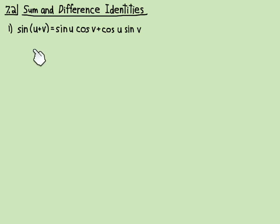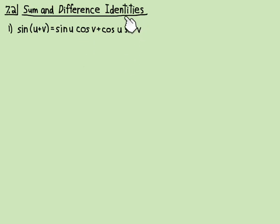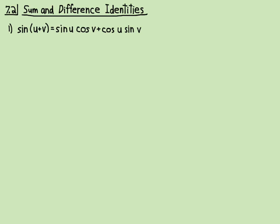The sine identity starts with sine first. So sine u, then cosine v. And then on the second term, it has the cosine first — cosine u, sine v. Notice there's a plus between the u and the v on the left, and there's a plus between the two terms on the right.